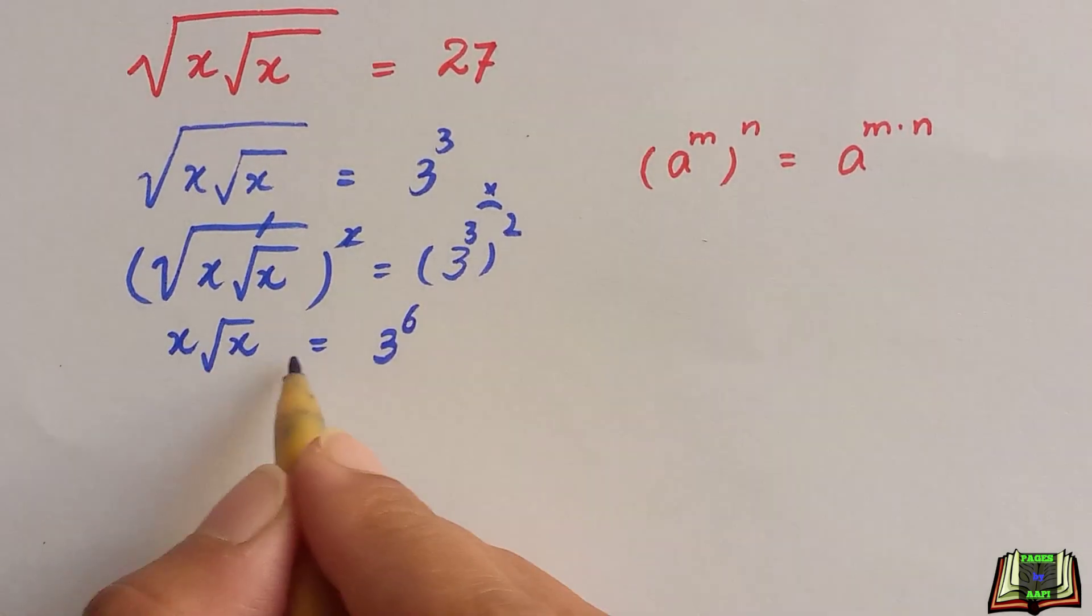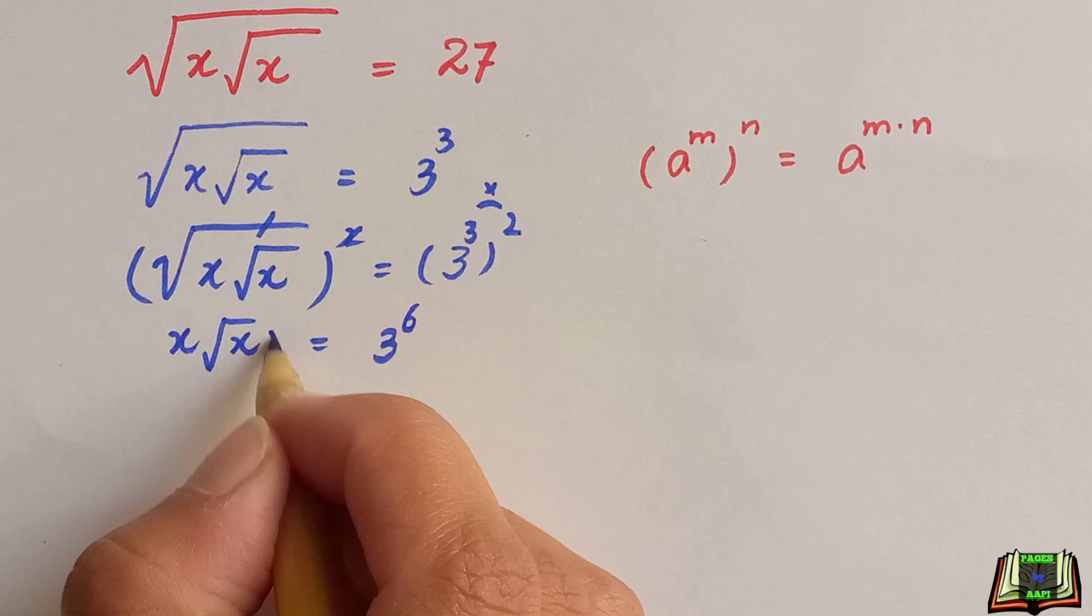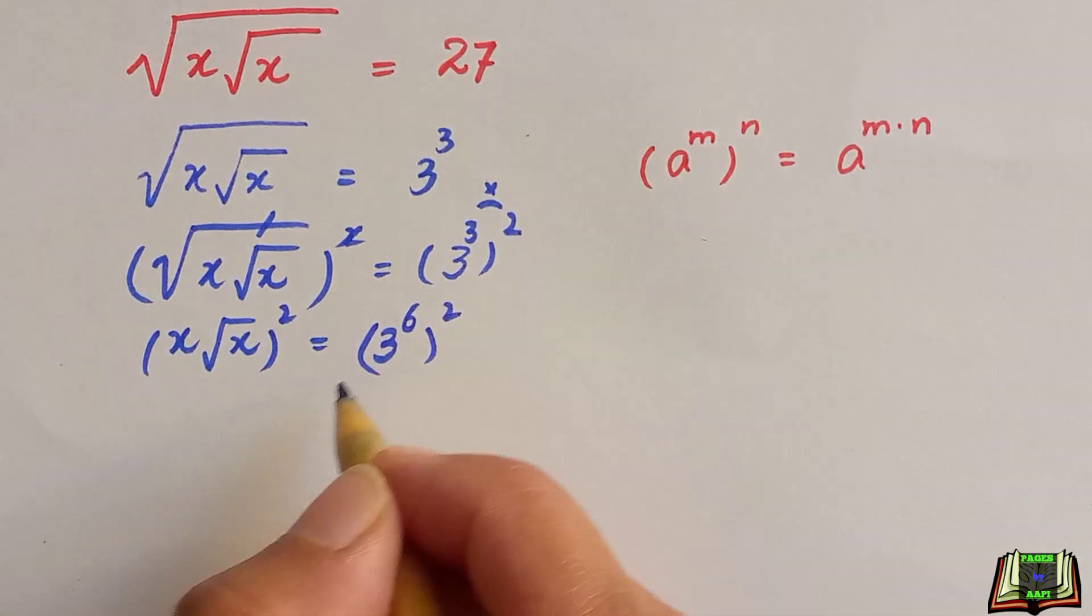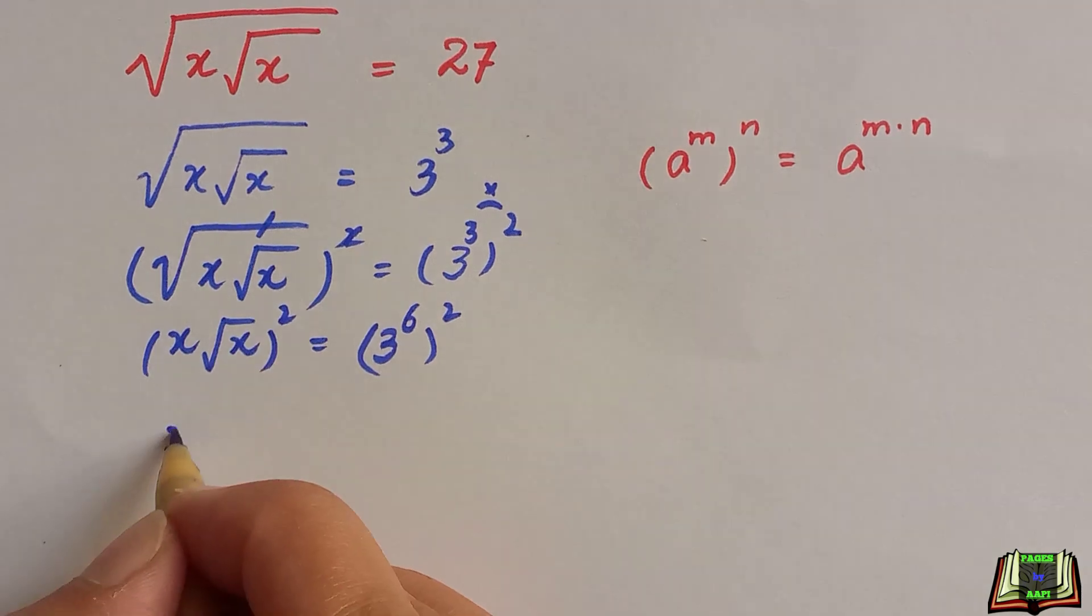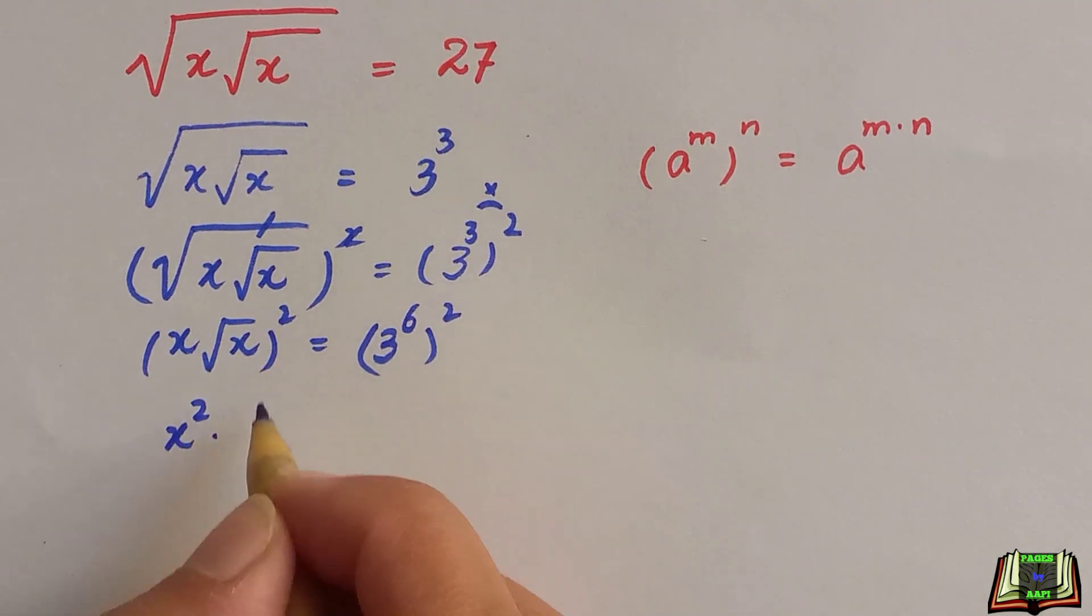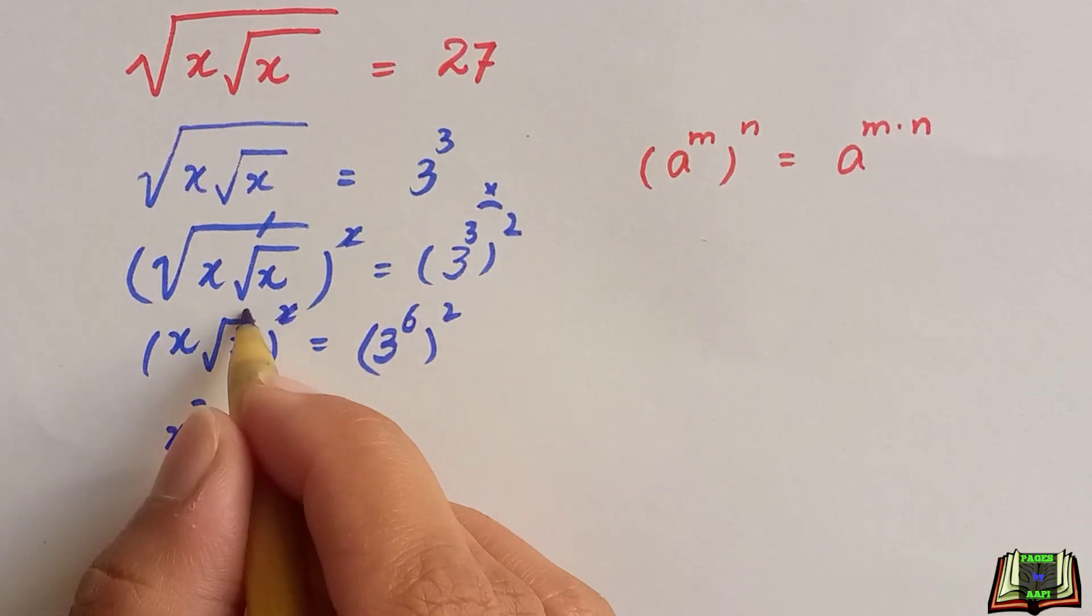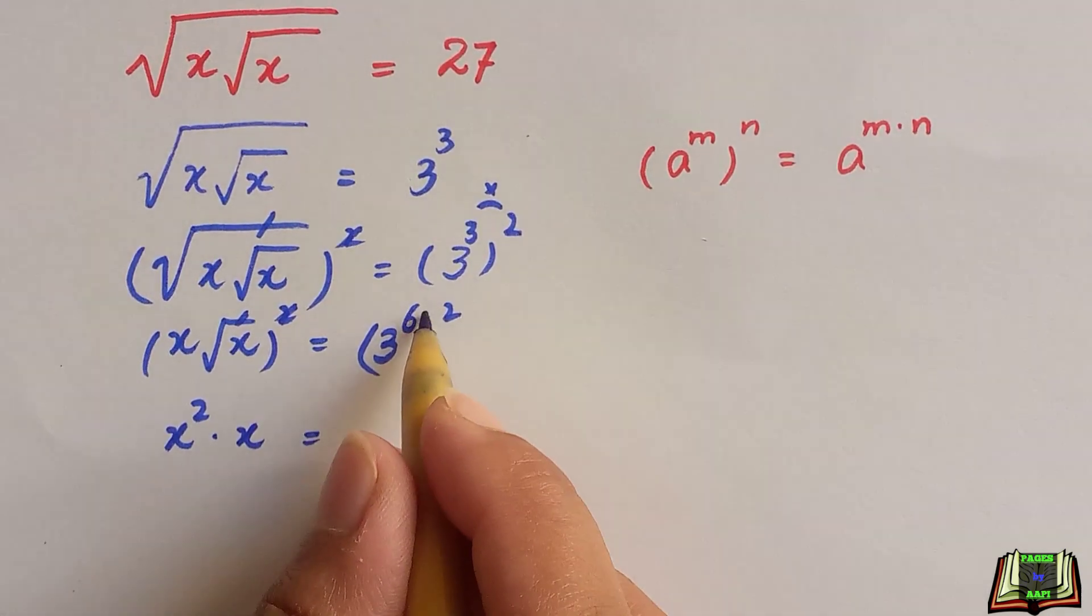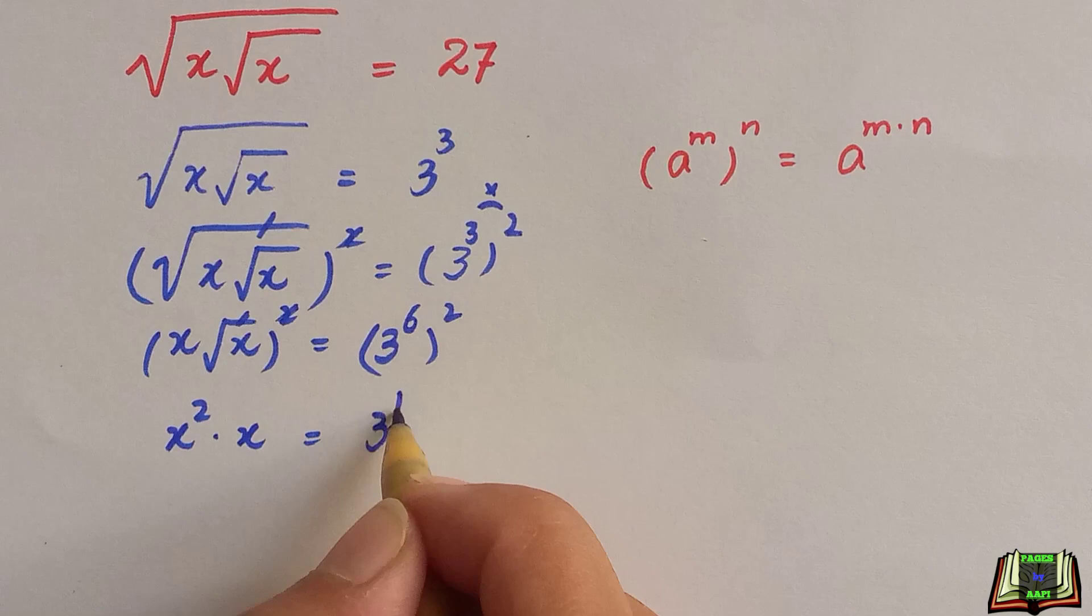Once again, we are going to take the square of this equation on both sides. So this will be equal to x squared times this root and square will be cancelled out, x only is equal to, again these two powers will be multiplied, 3 raised to power 12.